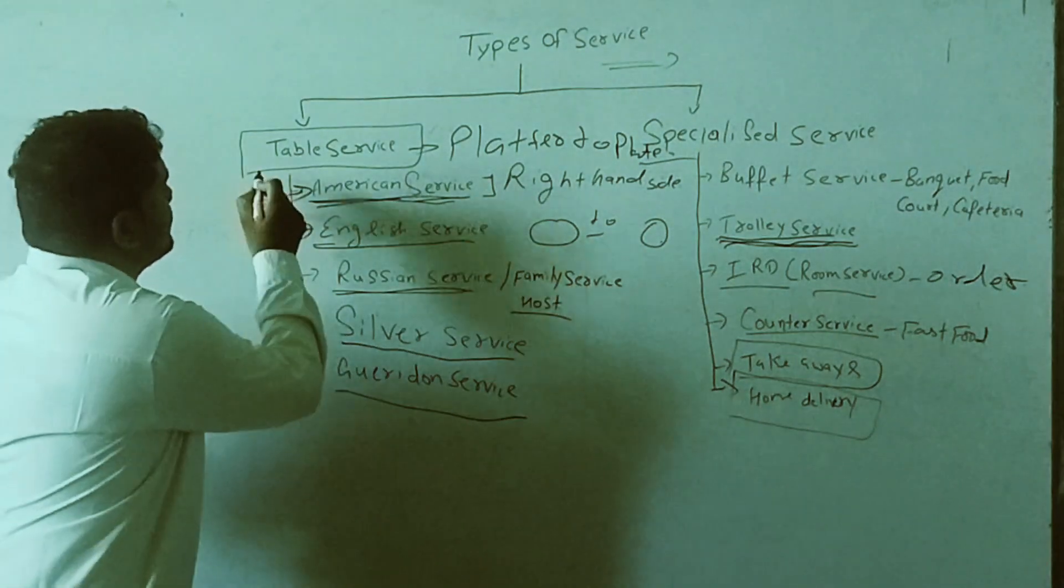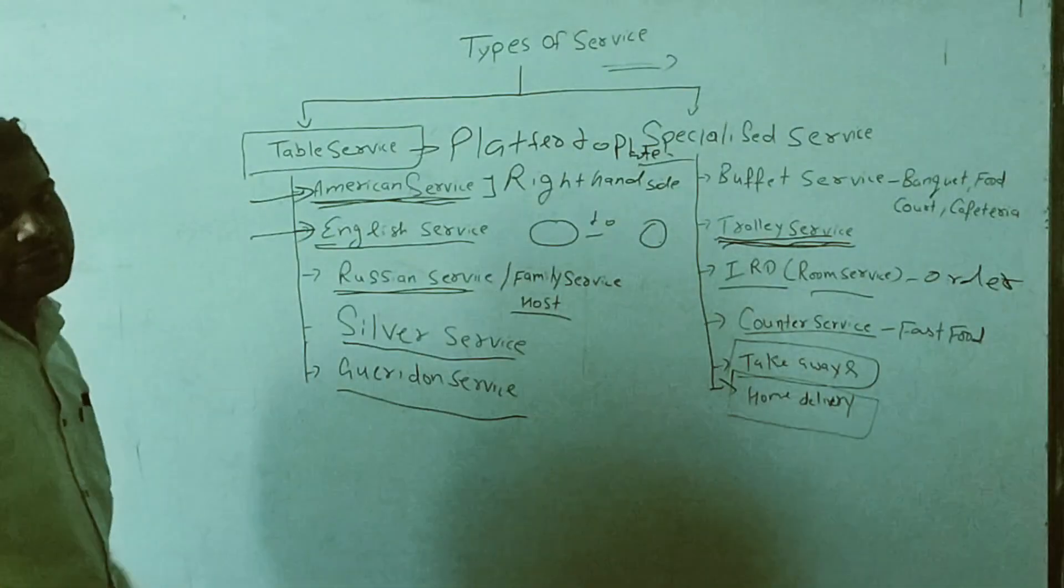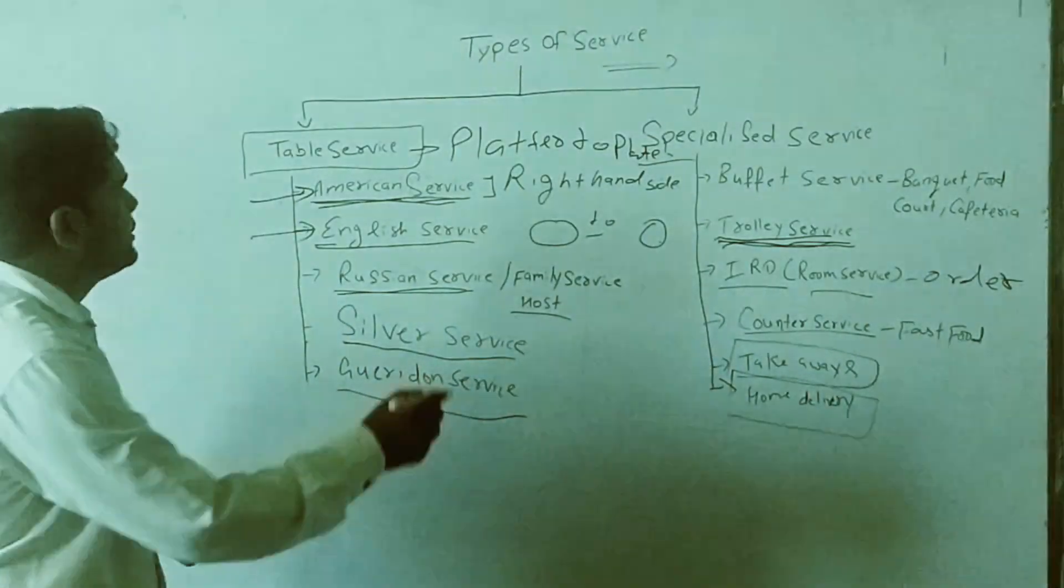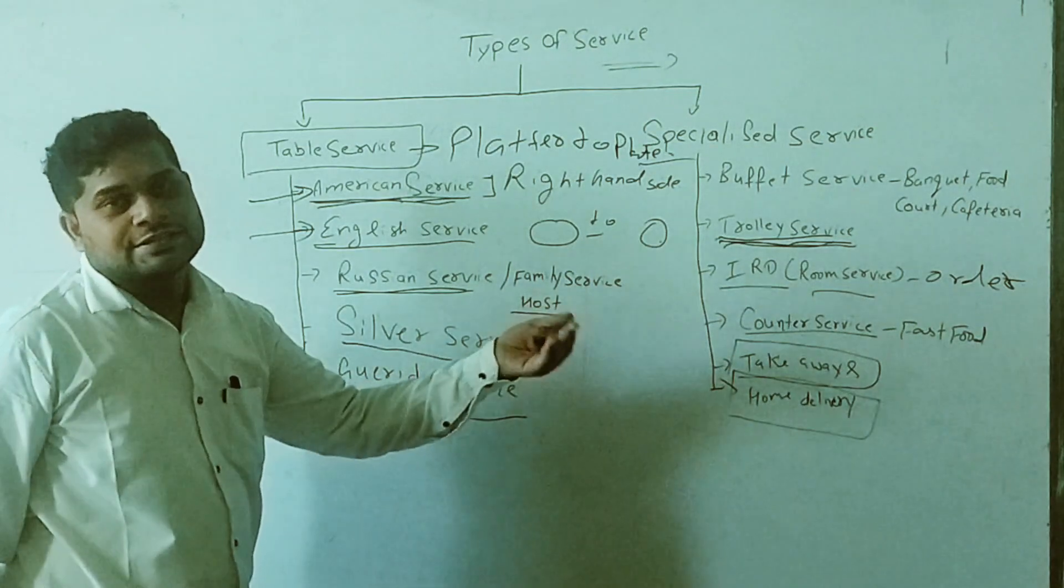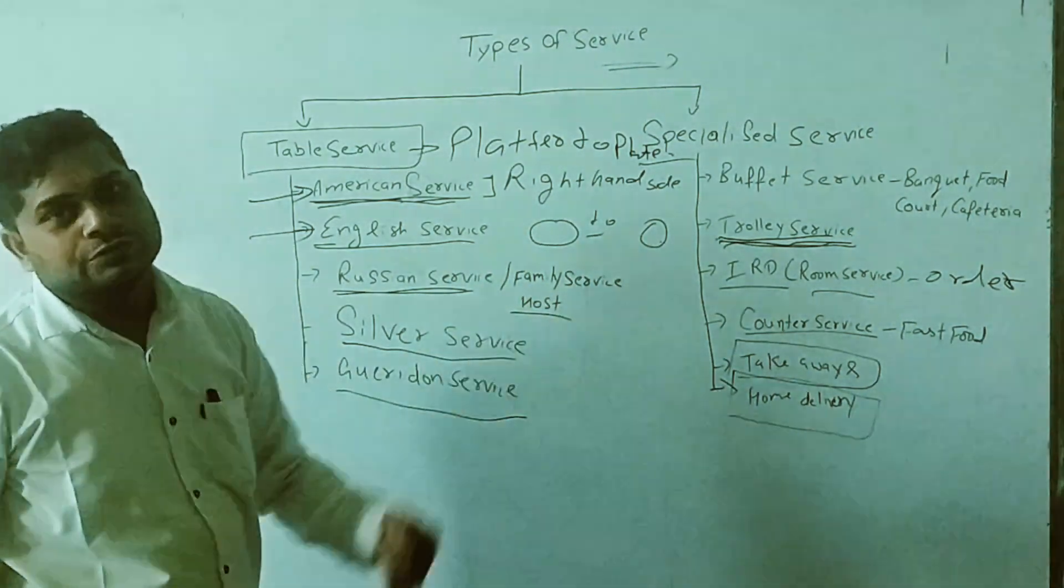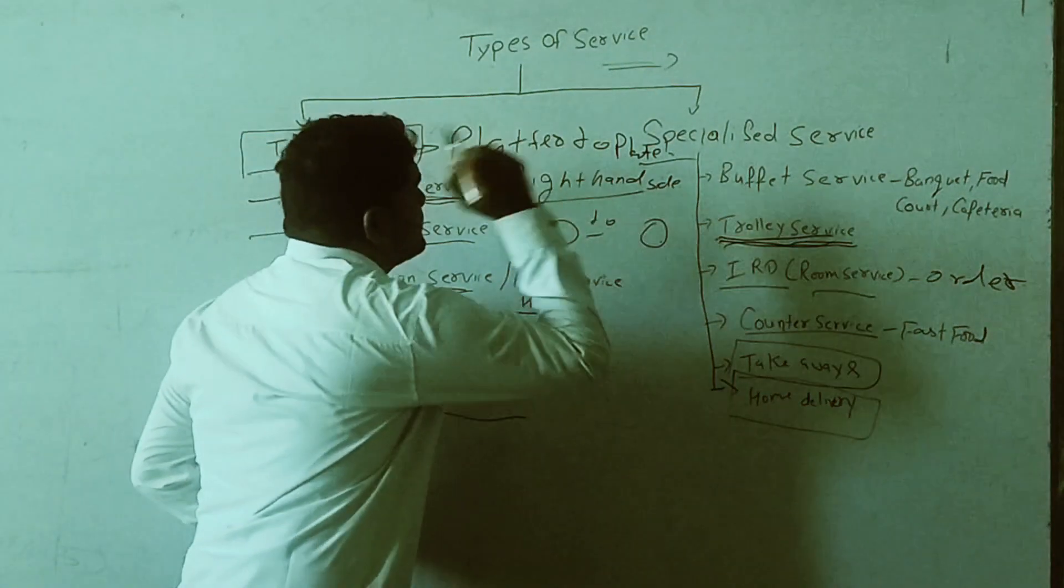First one is table service. Under this is American service. Basically, American service is a type of service in which the food is served pre-plated. We can serve the food directly to the guest in the restaurant from the right-hand side, and the clearance will also be done from the right-hand side.